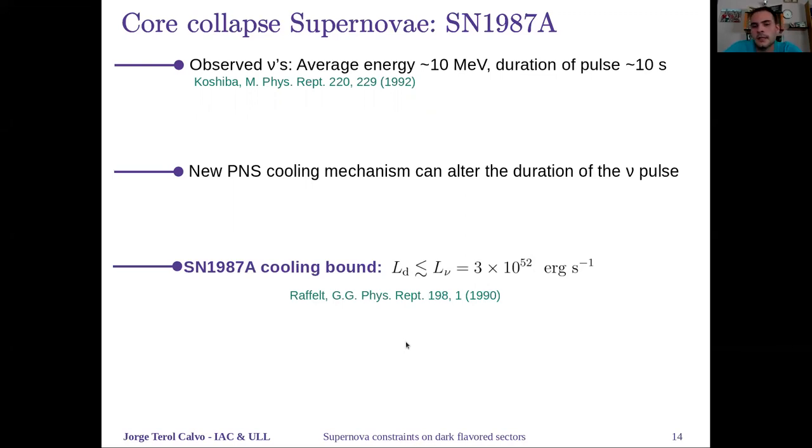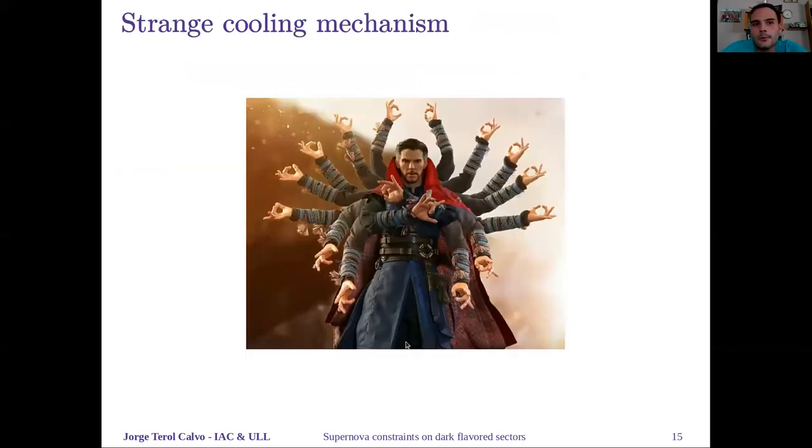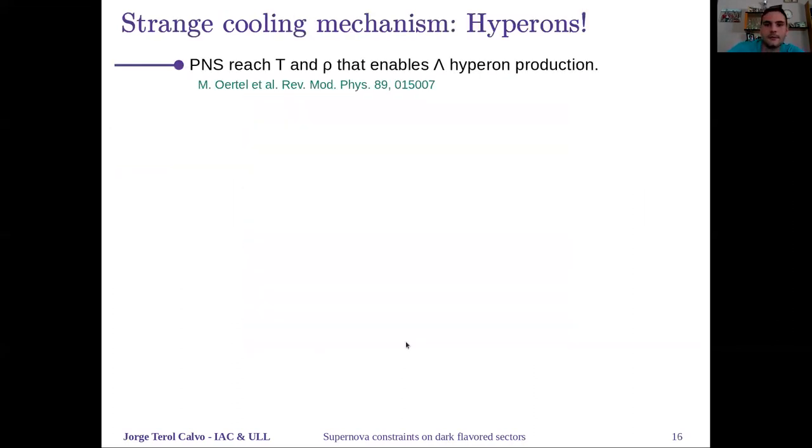This gives us a bound, known as the supernova 1987A cooling bound, which tells us that the dark luminosity—the luminosity with a new cooling mechanism by some new interaction or new particle—cannot be larger than the luminosity of neutrinos. We propose a strange cooling mechanism. Of course, I'm talking about hyperons, because in the proto neutron star, the temperatures and densities reached enable the production of lambda hyperons. If these lambda hyperons would decay to a neutron and a dark boson, this would be a new way of cooling for the proto neutron star.